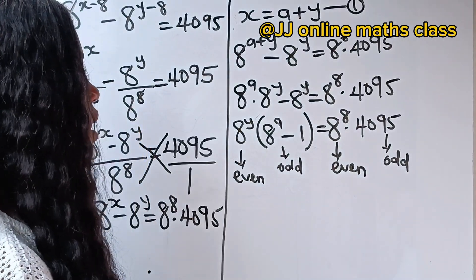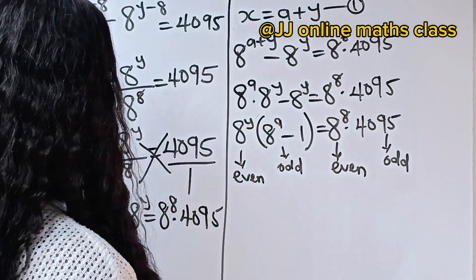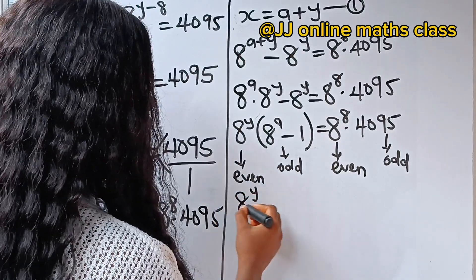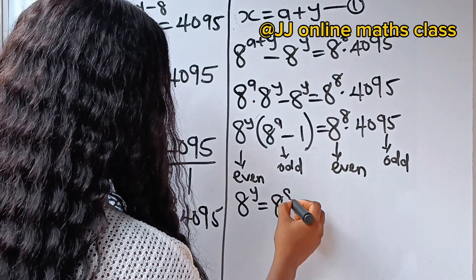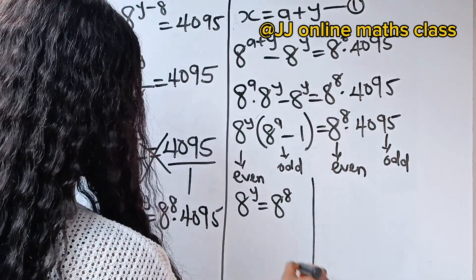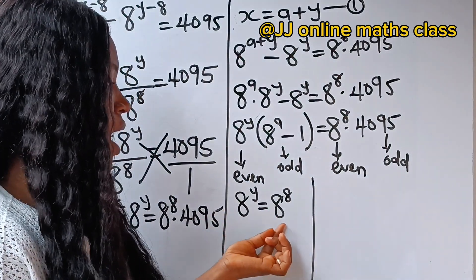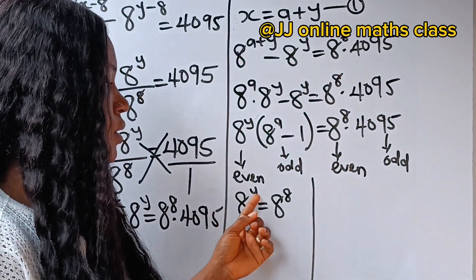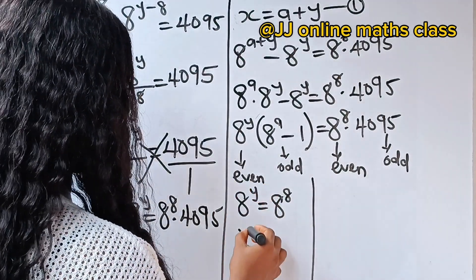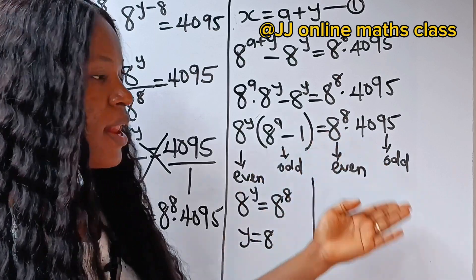We can now say 8 to the power of y is equal to 8 to the power of 8. Then, obviously by comparison, once the bases are equal, the powers are equal. That means y is equal to 8. We have gotten the value of y.